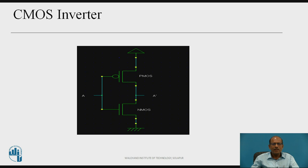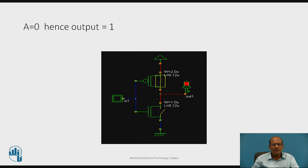Now let us design a CMOS inverter. The CMOS inverter consists of one PMOS and one NMOS, as shown in the figure. One PMOS acts as the pull-up network and one NMOS acts as the pull-down network. Input is A and output is complement of A, that is A bar. When input A is equal to 0, PMOS will conduct and NMOS is cut off — equivalent to an open circuit — so output is connected to VDD, that is output is logic 1. When input is 1, PMOS will not conduct.